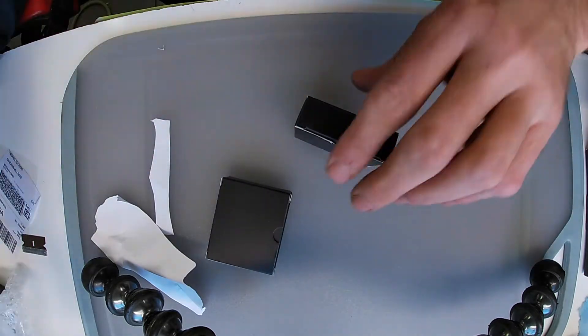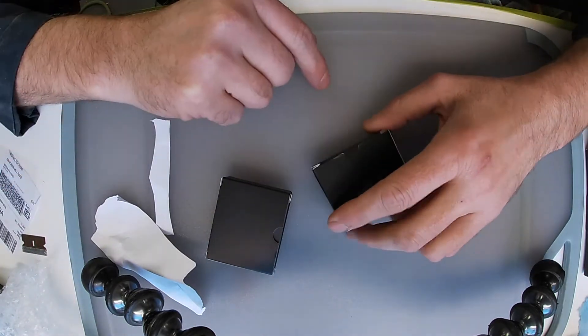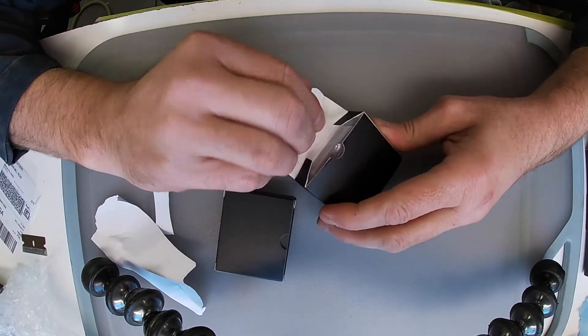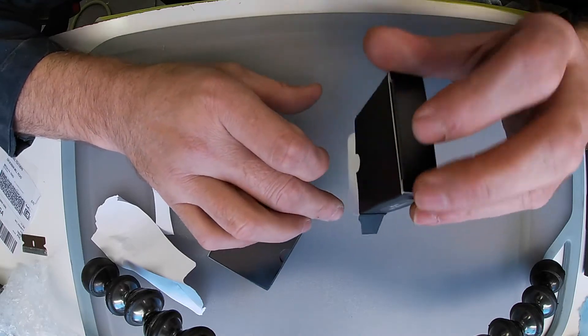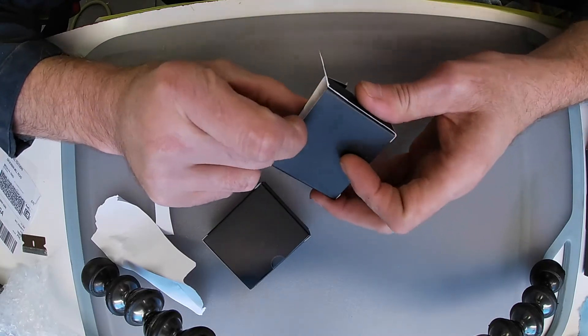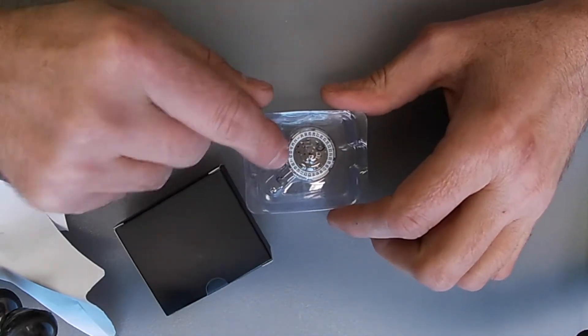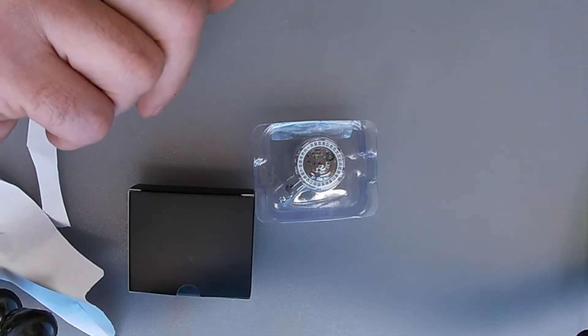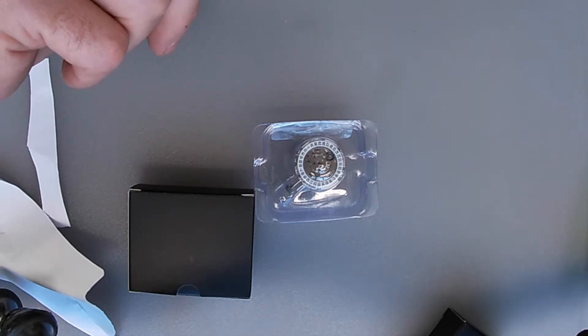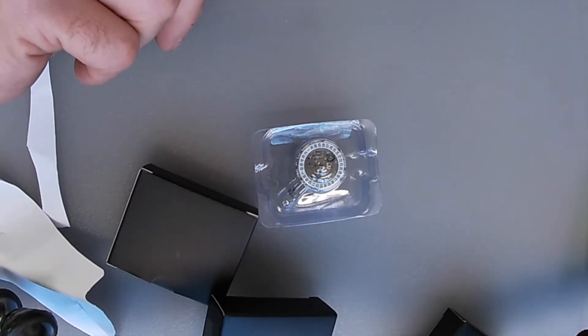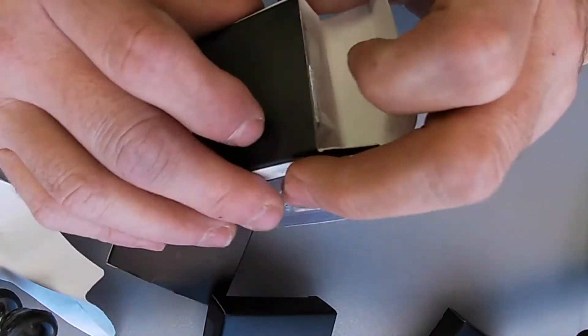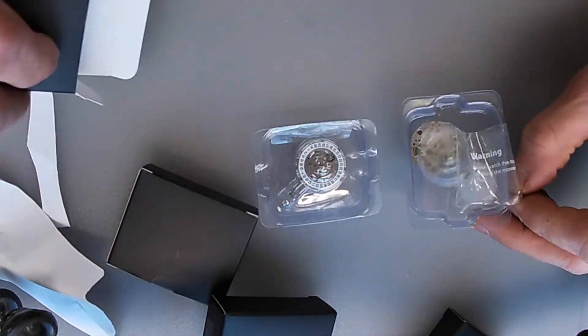Now this should be the 8315 movement which is a superior movement to the one that came with the watch. The reason they sent this movement is because this one is a date. So this is the date movement.